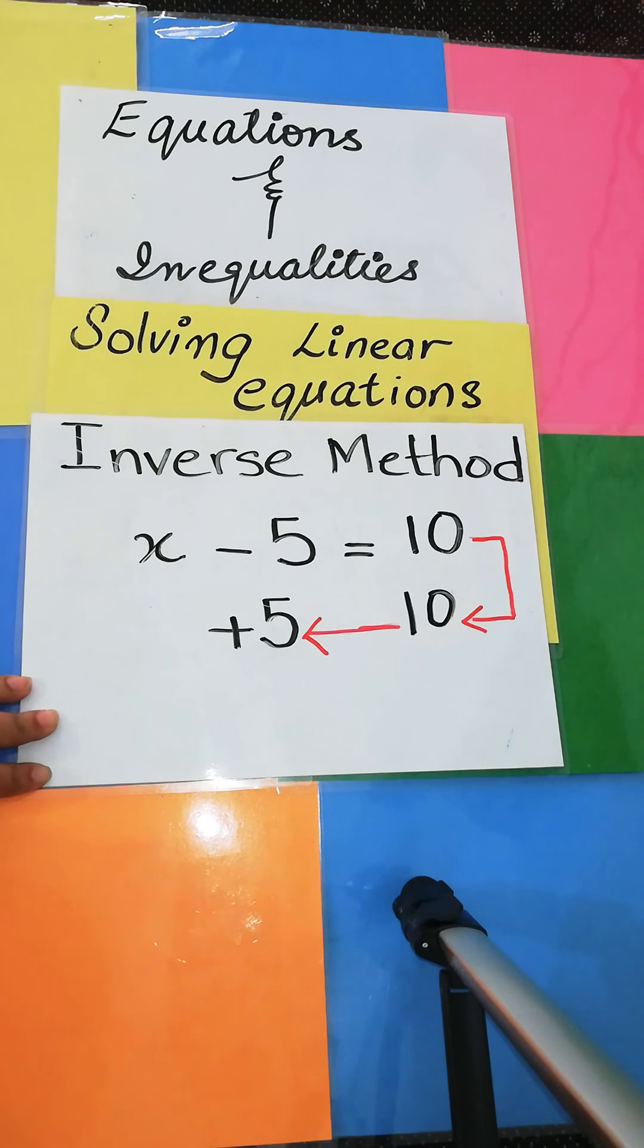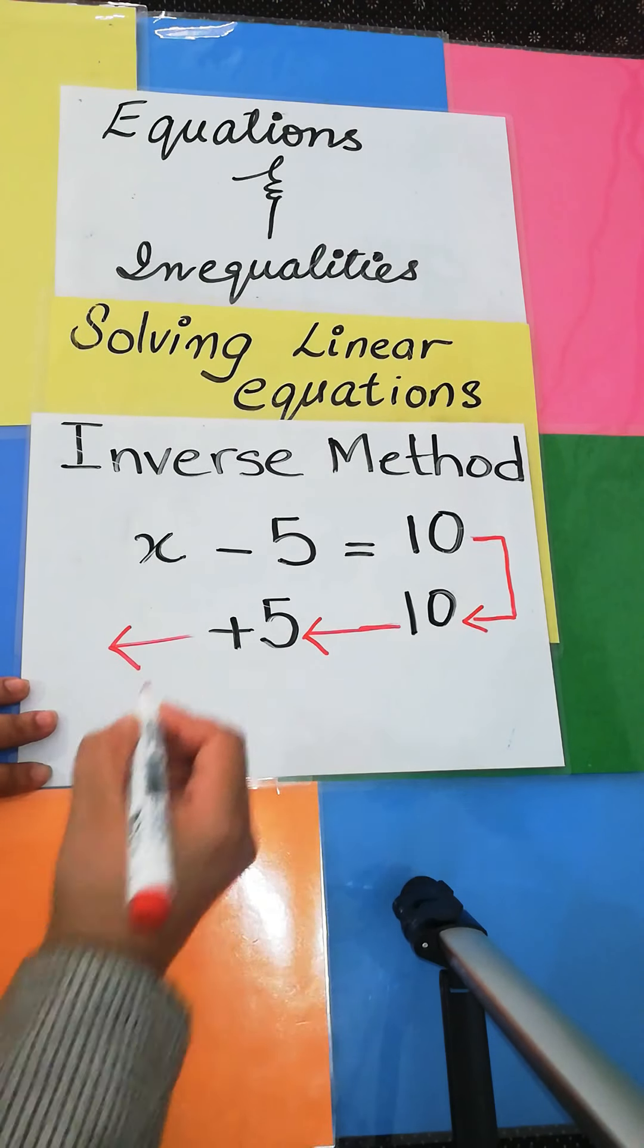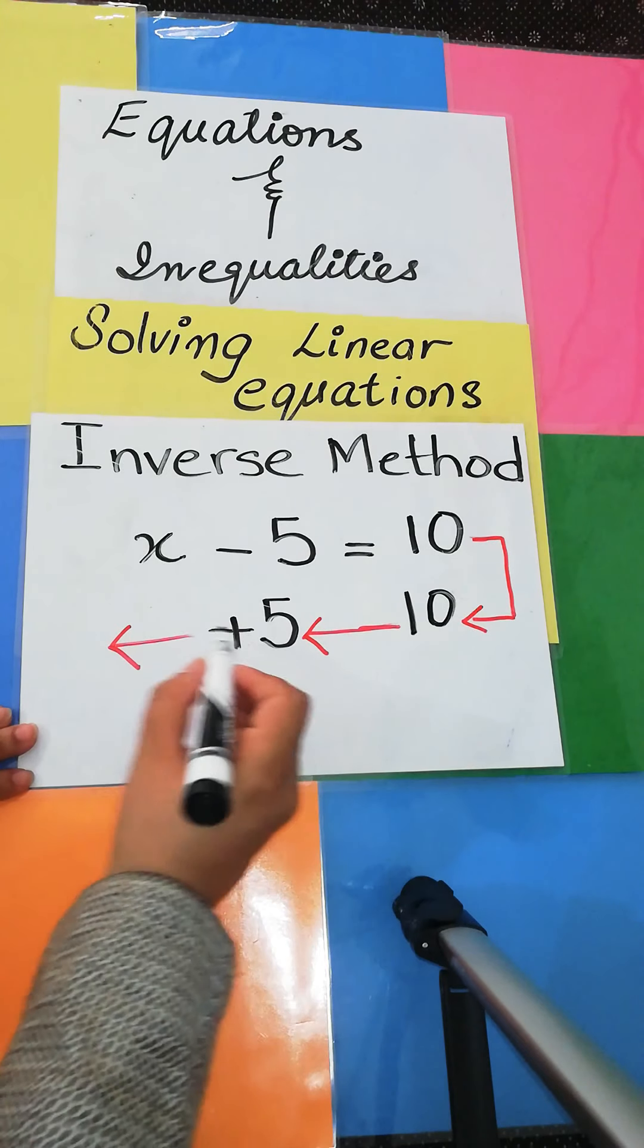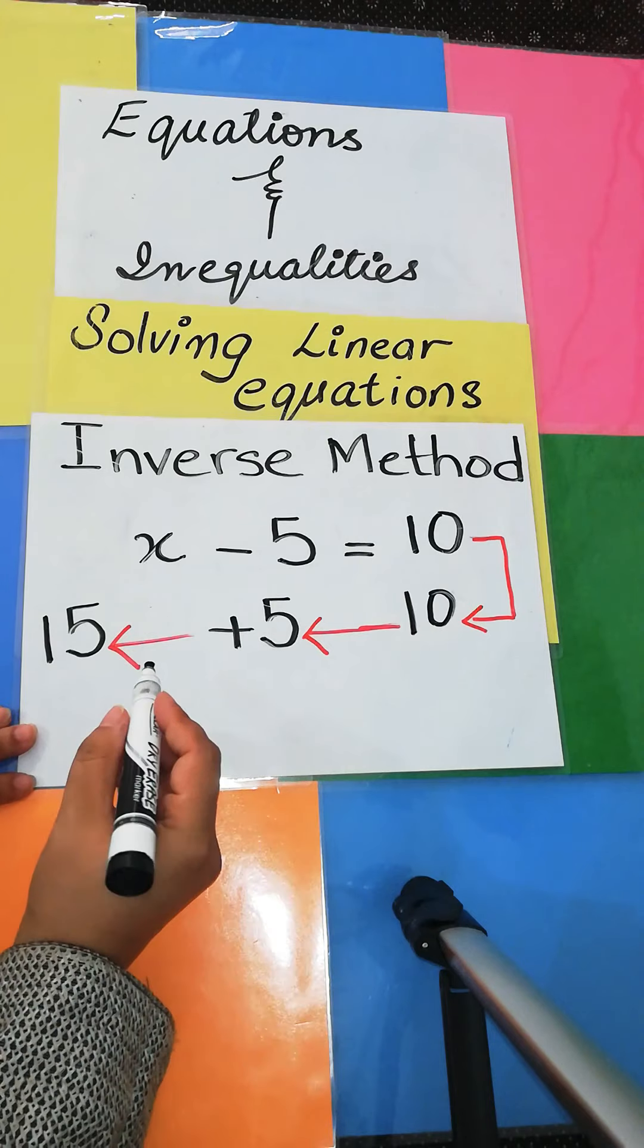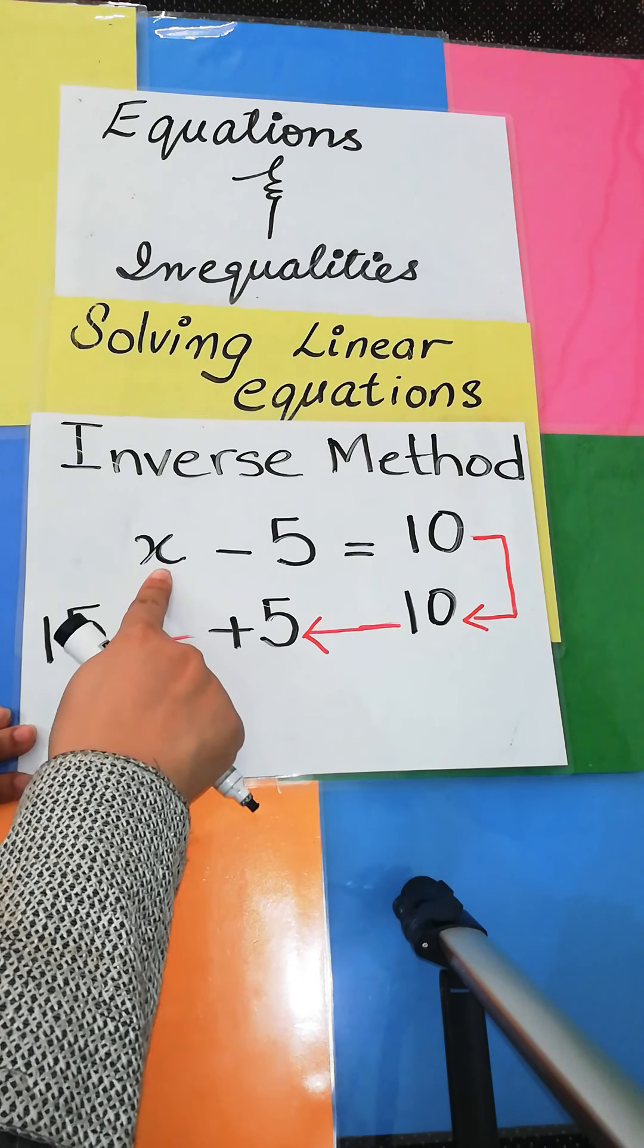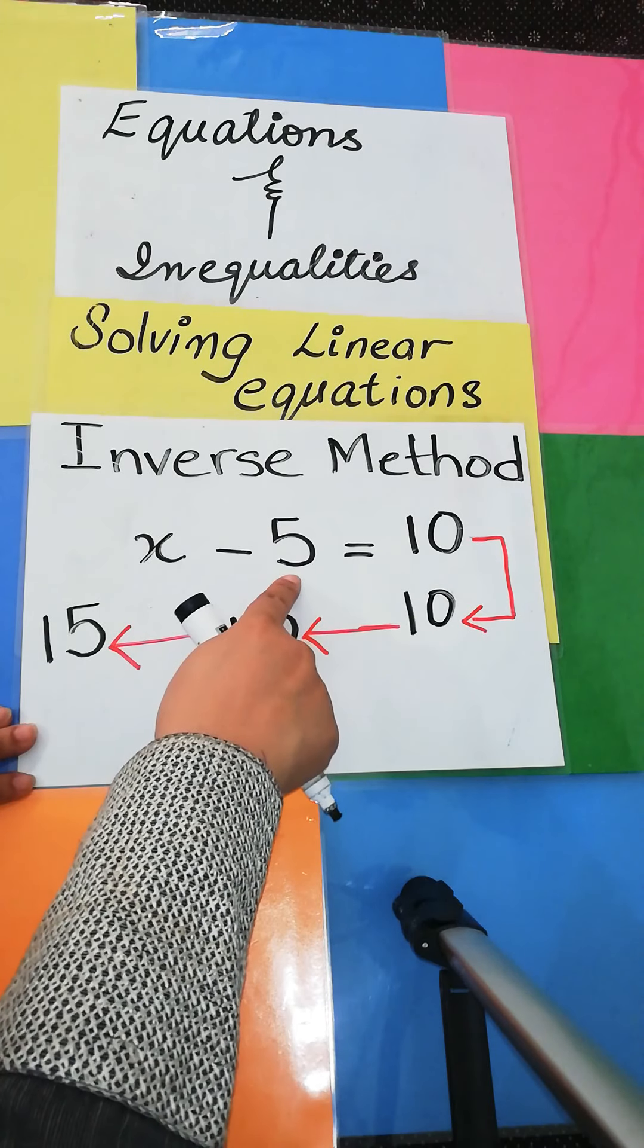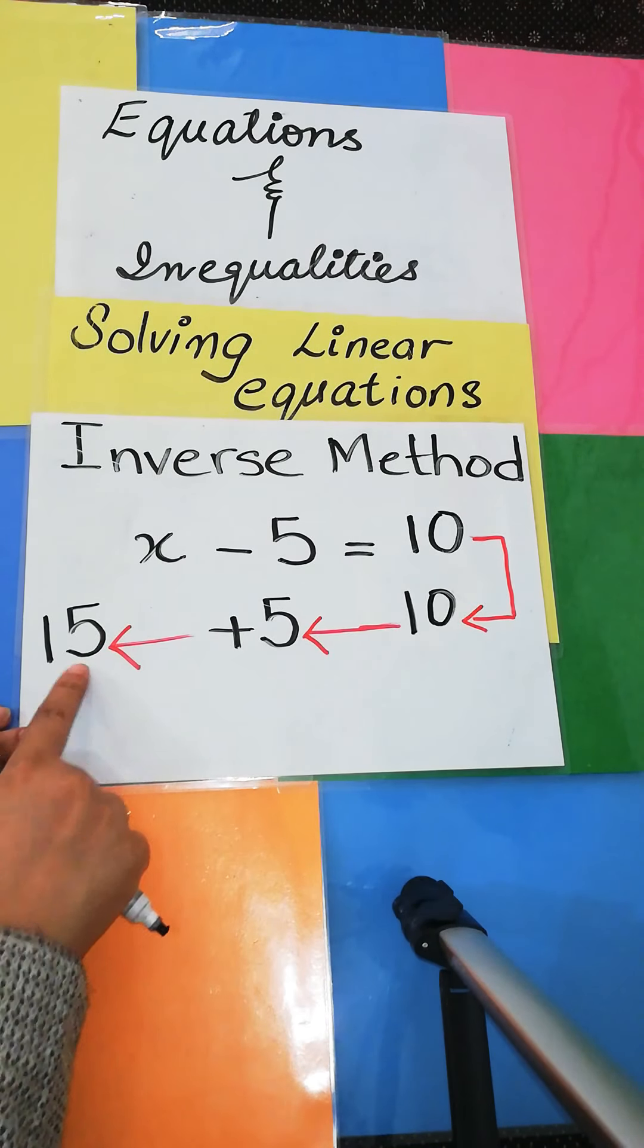So whatever the number is here, we have to write the inverse of it. Now the inverse of minus 5 is plus 5. Again I'm going to make the arrow, and I'm going to write what is 10 plus 5. 10 plus 5 is 15. So it means that 15 was the unknown number from which when I subtracted 5, 15 minus 5 equals 10.